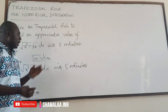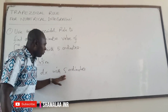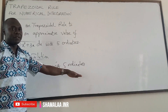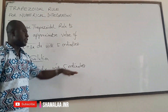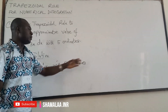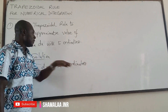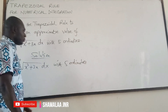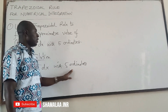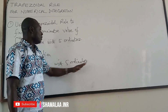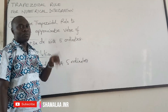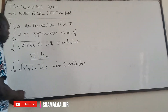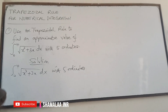At times, five ordinates can also be expressed as four intervals. Six ordinates would be the same as five intervals; seven ordinates would be the same as six intervals. Instead of ordinates we say intervals, but the number of intervals plus one equals the number of ordinates — take note of this.